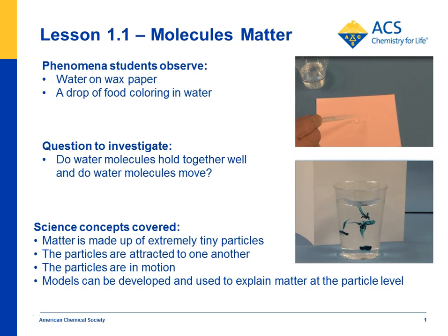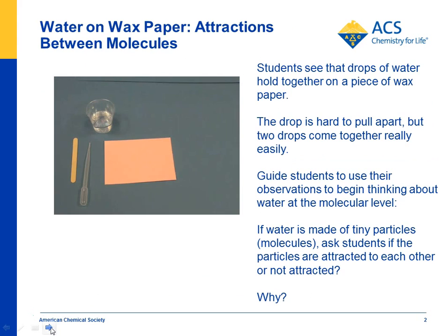In lesson 1.1, students put drops of water on wax paper to see how water behaves, and they watch as you put a drop of food coloring into room temperature water to see what the food coloring does and what they could learn about water. The whole idea is for kids to make observations, to begin to understand that matter is made up of extremely tiny particles, that the particles are attracted to one another and that they're in motion, and that they can actually develop models to explain matter all the way down at the molecule level.